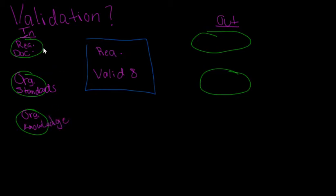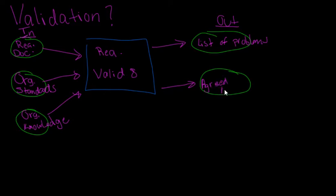So what we're doing we're taking all those inputs, we're putting them in our requirement validation process and then they're going to produce two outputs and these two outputs are firstly a list of problems. So these would be the requirements that need to be solved and then we're going to have the agreed actions and these will be the agreed solutions to solve these problems. So these agreed actions will then come to solve those list of problems.